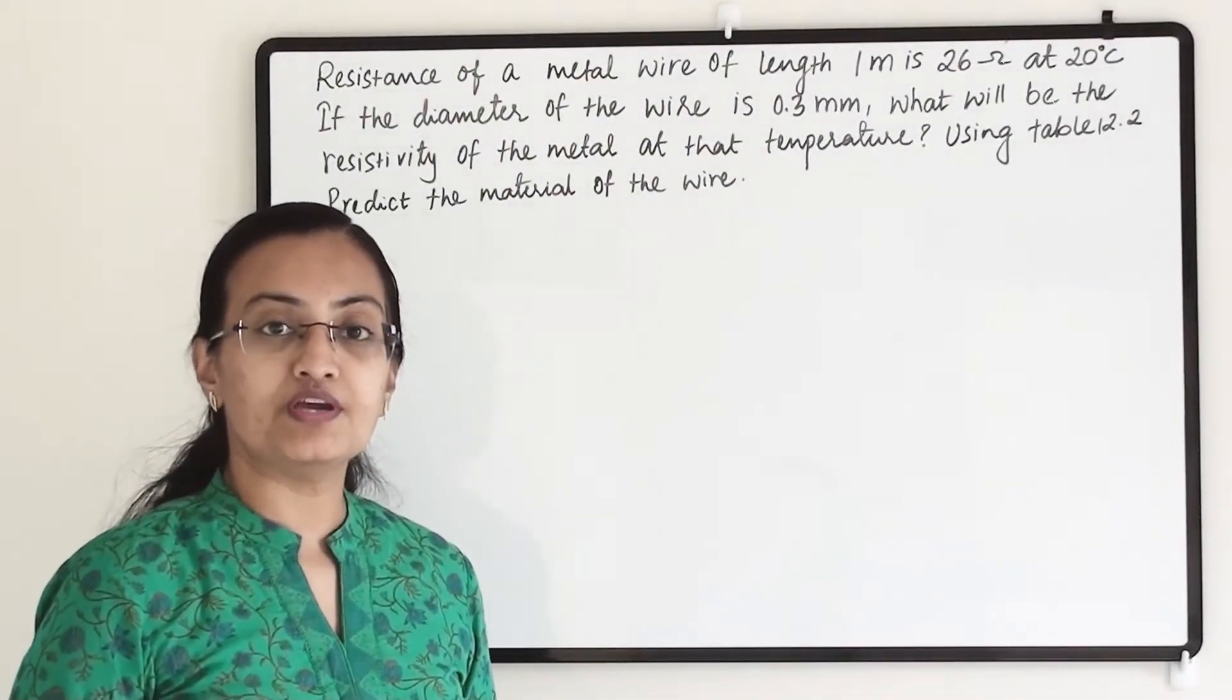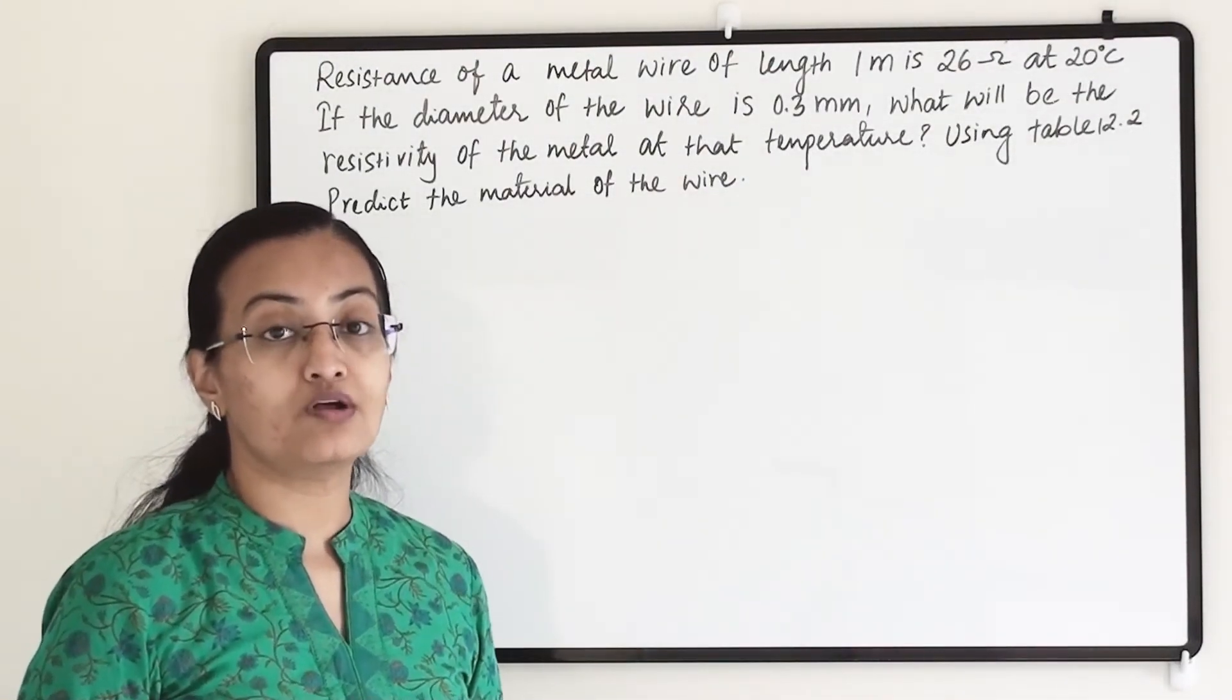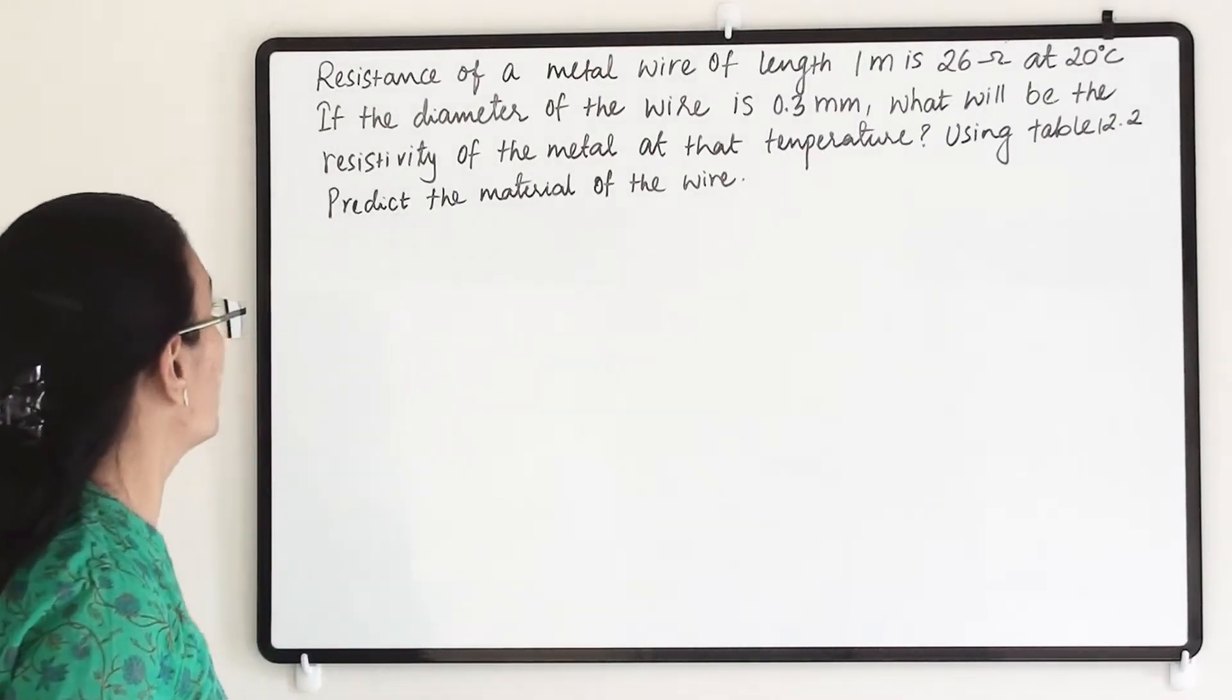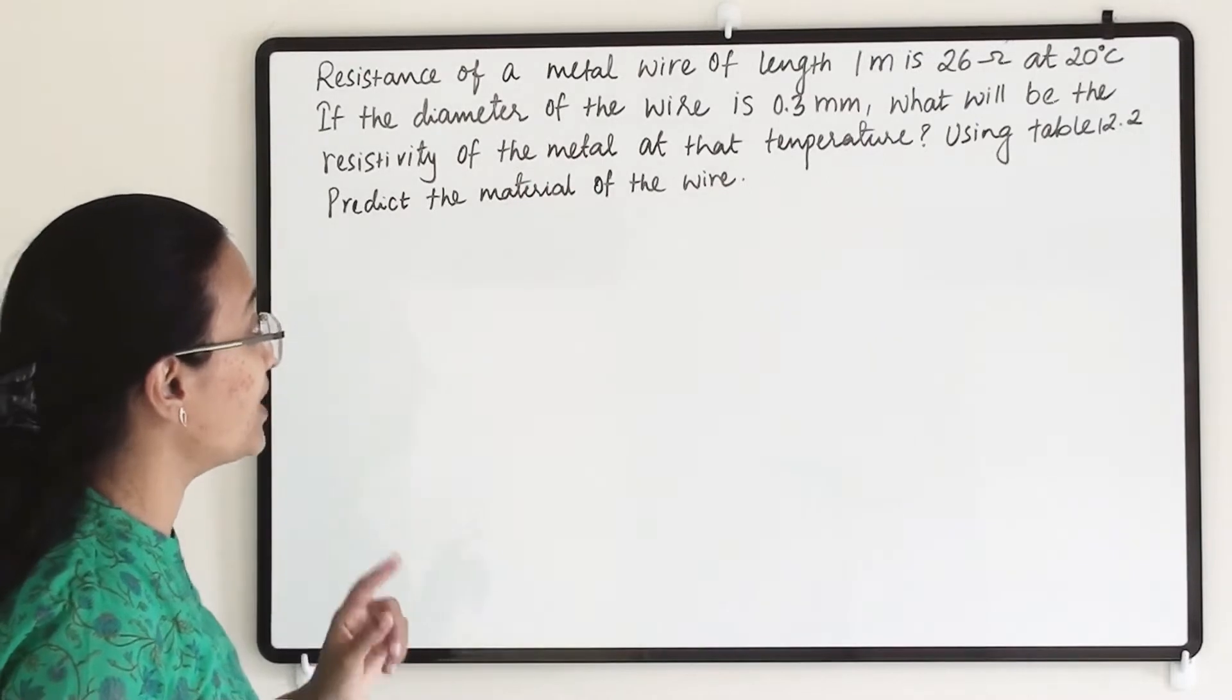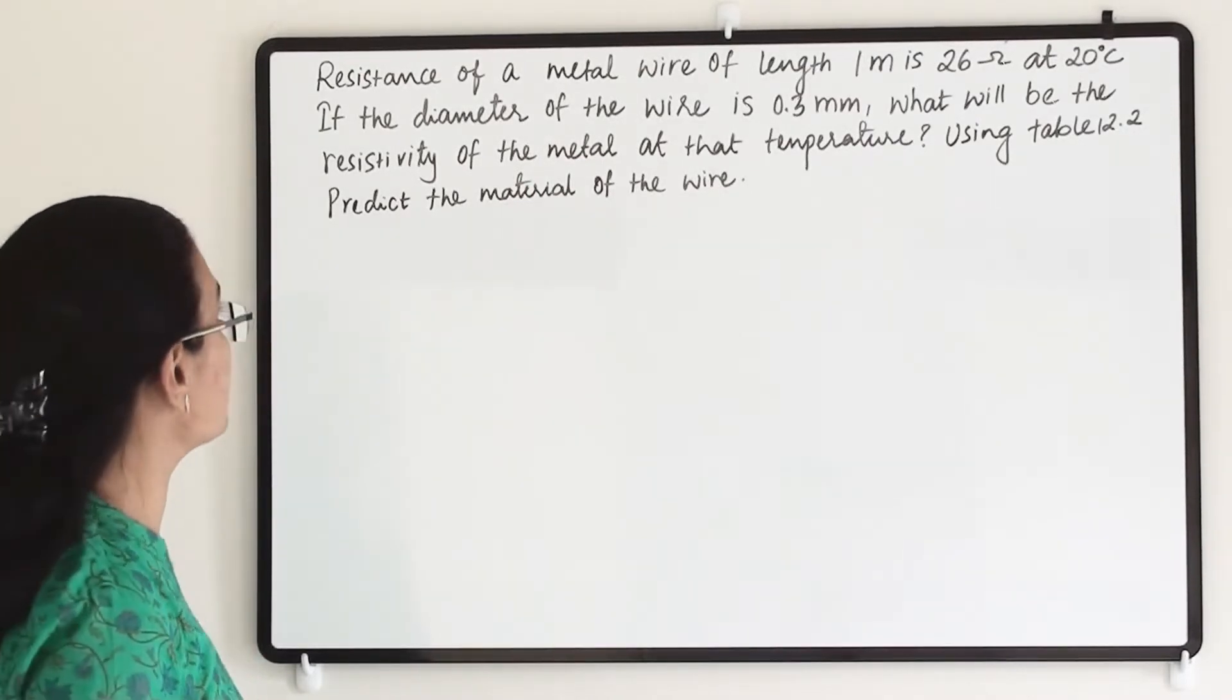Welcome to Learn Yourself. Today we are going to learn and understand solved example 12.5. It says that resistance of a metal wire of length 1 meter is 26 ohm at 20 degrees Celsius.